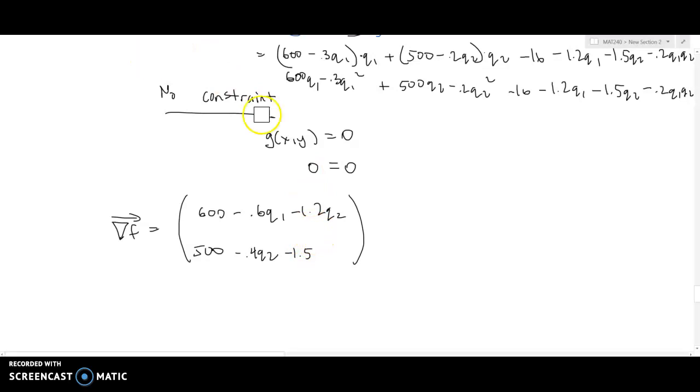Back here we should have said we missed a term. This is minus 1.2 as the derivative of 1.2q1, and then minus 0.2q2. So for the partial with respect to q2, the derivative of that is negative 1.5, and the derivative of that term is negative 0.2q1.